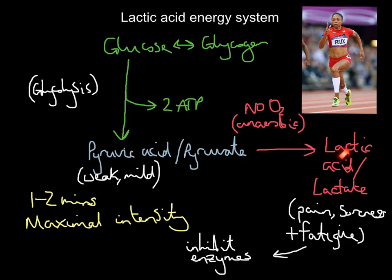The disadvantages are that in the absence of oxygen, pyruvic acid converts to lactic acid or lactate, creating pain, soreness, and fatigue. The other key disadvantage is a low energy yield — breaking down one molecule of glucose only produces two ATP. Compared to the aerobic system, this is very low, so the low energy yield is a significant disadvantage of the lactic acid system.